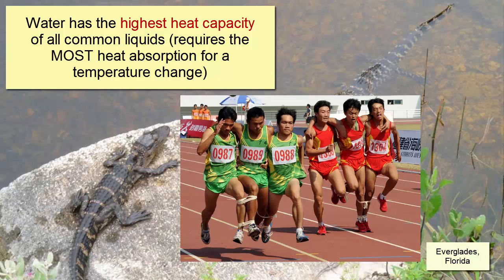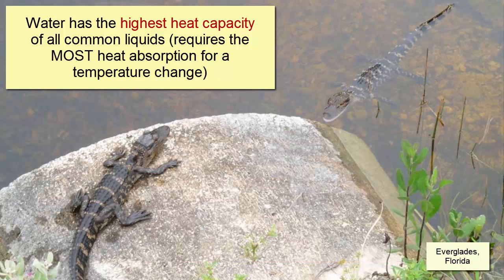Think about locking arms with your fellow classmates and then trying to run a race — you'll always be slower than those running separately. We experience different heat capacities when we are outside on a hot day. In this image from the Everglades in Florida, we see two small alligators, reptiles whose internal temperature comes mostly from their surroundings and must move within its environment to minimize its chances of getting overly hot or overly cold.